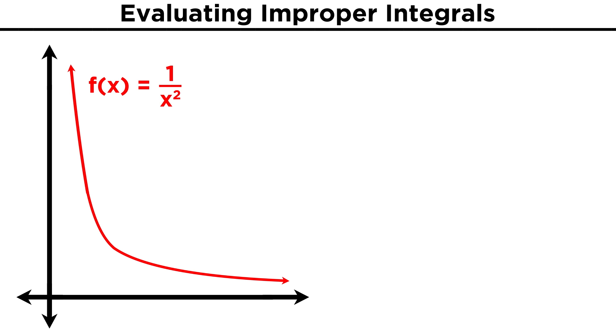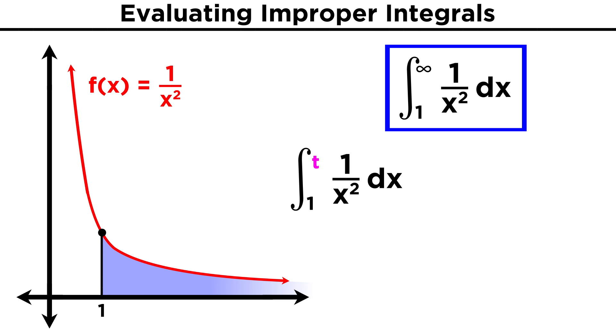Take for example the curve one over x squared. Let's say we want to integrate this starting at x equals one and going to infinity. To examine what happens as we get closer to infinity, let's select an arbitrary upper limit of integration and call it t. We can treat this like a definite integral and get the antiderivative.